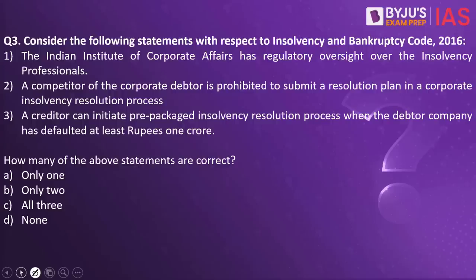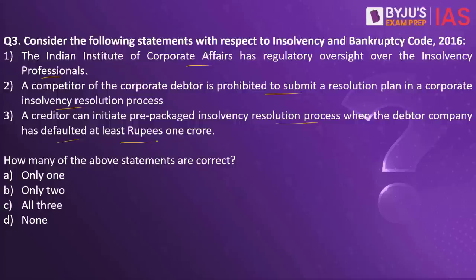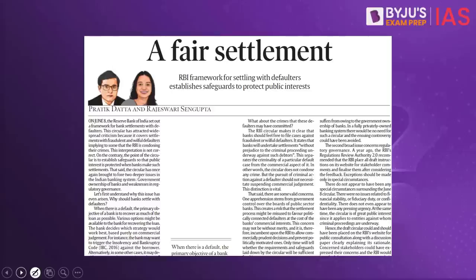Consider the following statements with respect to the Insolvency and Bankruptcy Code of 2016. The Indian Institute of Corporate Affairs has regulatory oversight over the insolvency professionals. A competitor of the corporate debtor is prohibited to submit a resolution plan in a corporate insolvency resolution process. A creditor can initiate a prepackaged insolvency resolution process when the debtor company has defaulted at least rupees 1 crore. How many of the above statements are correct? The answer is none. This practice question is taken because an article on the Indian Express makes a reference to the Insolvency and Bankruptcy Code.